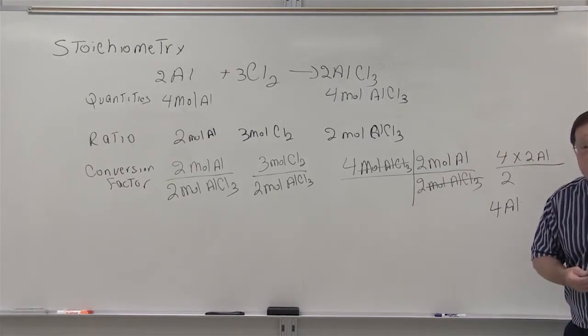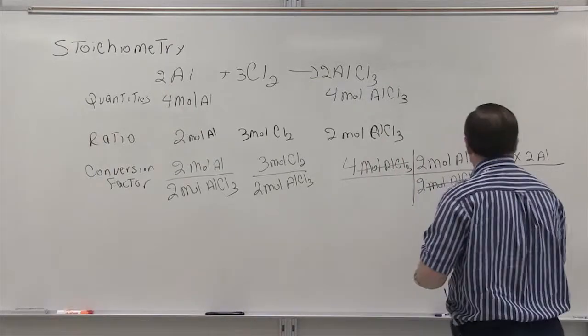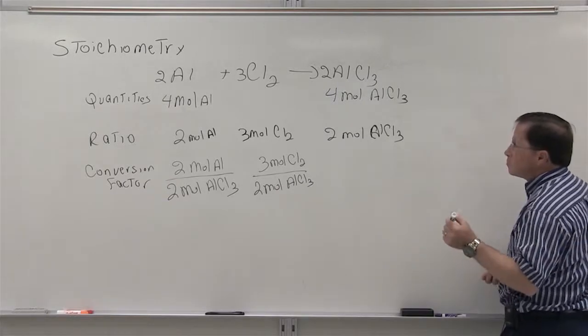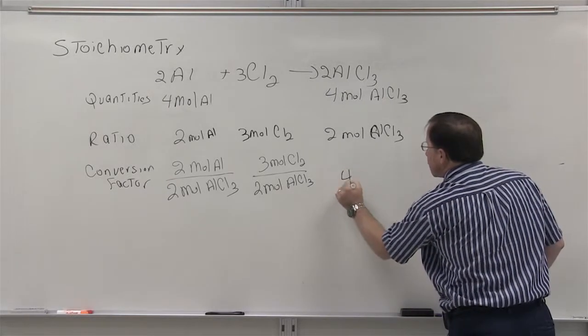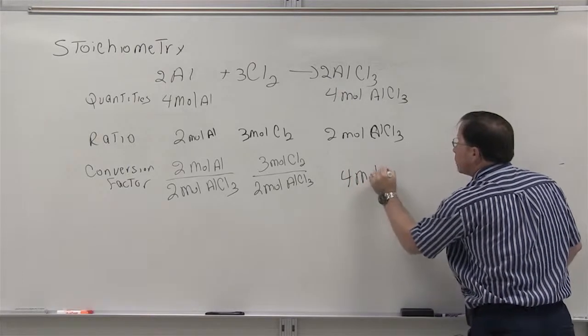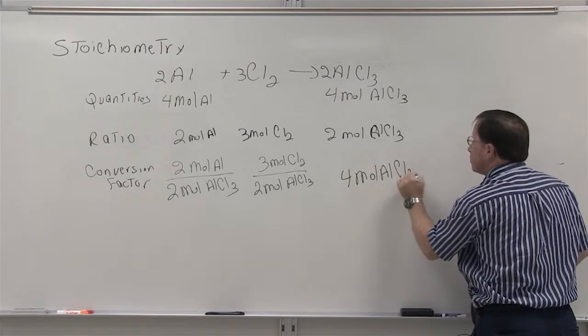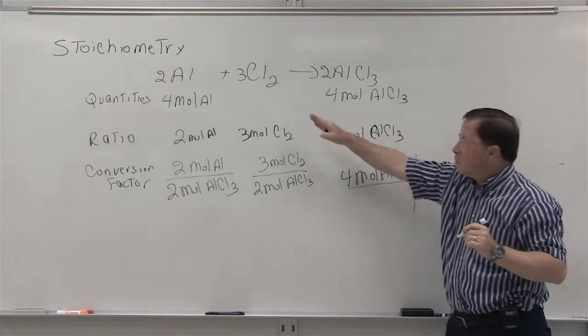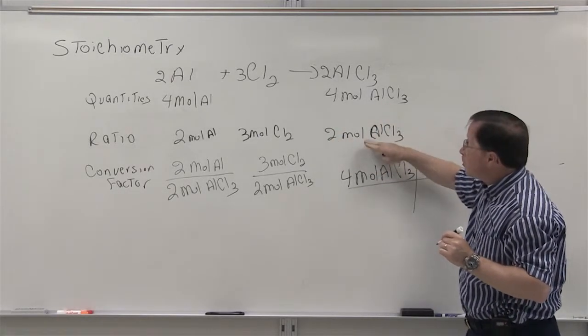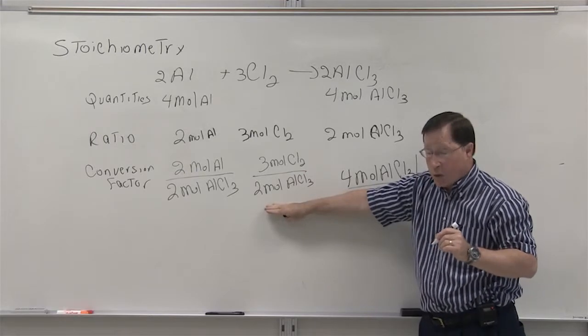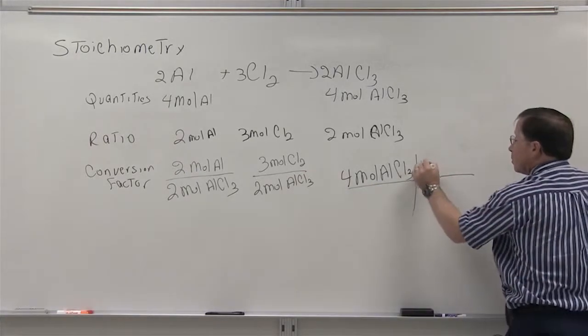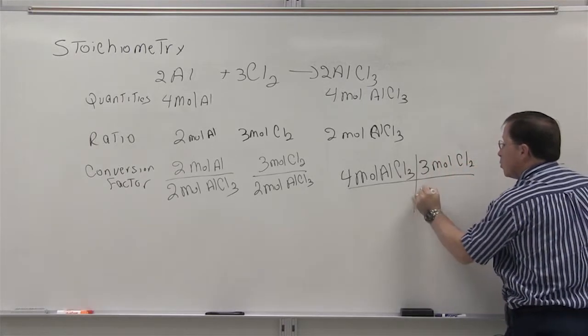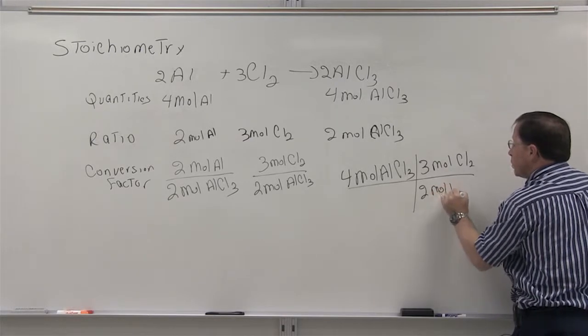We're going to do the same thing with the chlorine. We still have a goal of four moles of aluminum chloride. We're going to use our T-chart. The ratio between aluminum chloride and chlorine is expressed in this conversion factor, three moles of chlorine over two moles of aluminum chloride.